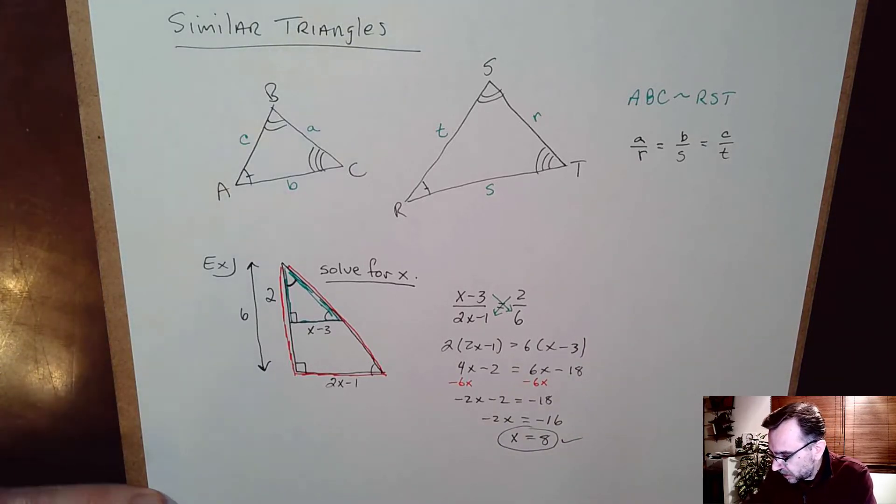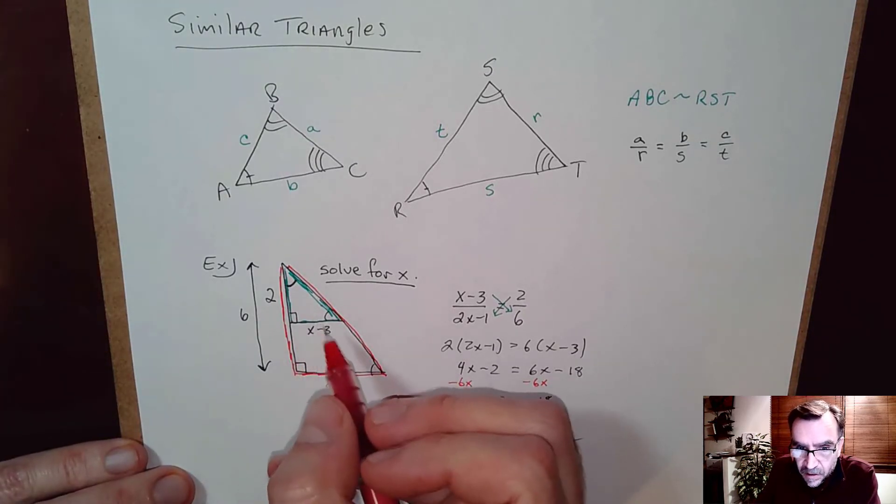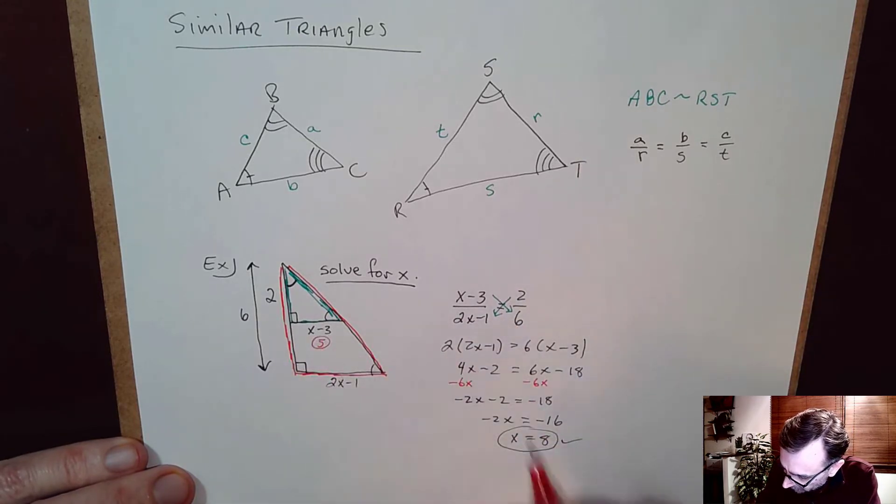If it actually wanted the sides we could plug that in right. So this side, this missing side here would be x minus 3. So 8 minus 3, this side would have been a 5. And then 2 times 8 is 16 minus 1, this side would have been a 15.